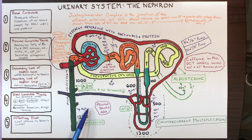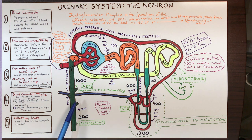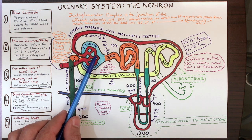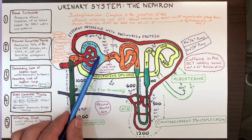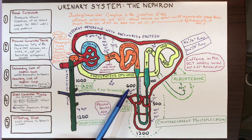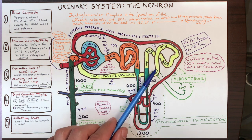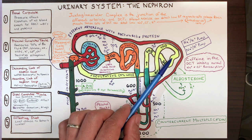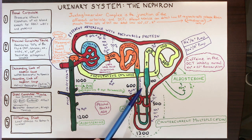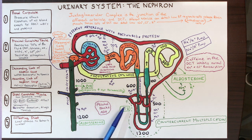In the descending limb, water is reabsorbed. In the ascending limb, sodium chloride is reabsorbed into the blood. Then in the DCT and collecting duct, a variable amount of water can be reabsorbed depending on hydration state, and some toxins can be secreted. These DCT and collecting duct processes are driven by osmosis and hormones like aldosterone and ADH.